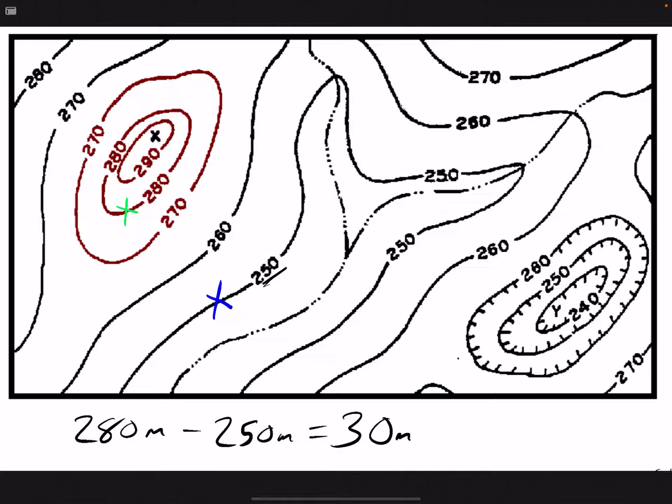We started at 250, then we went to 260. So when we went from one contour line to the next, we increased by 10 meters. So the contour interval is 10 meters.